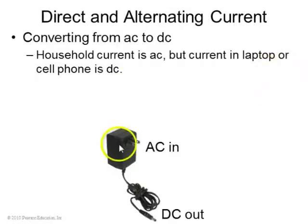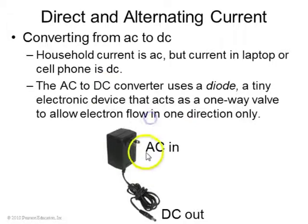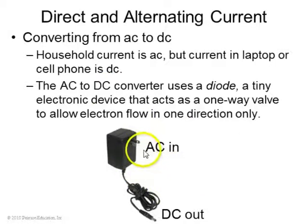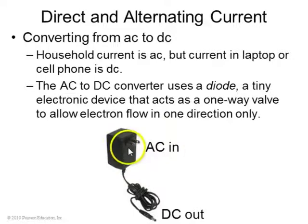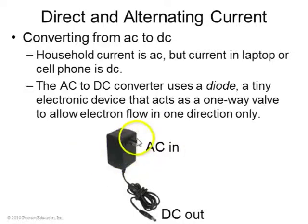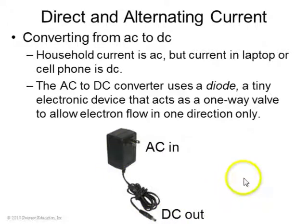Your laptop or cell phone uses DC, so you need a converter when you plug in, which converts AC in. There are little diodes inside, which are little one-way valves that only allow current in one direction, so you get DC out.